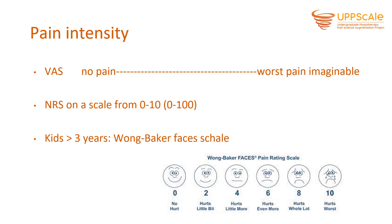Young kids are not able to understand numbers yet, so you need to find another way to measure their pain. For very young kids, there are scales that observe children, babies and toddlers. There are also scales for people with dementia or people who aren't able to verbalize their pain, where you can use observation scales.